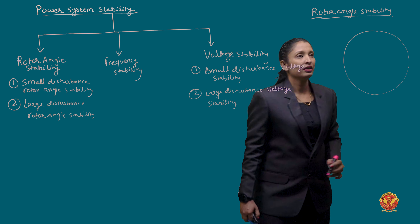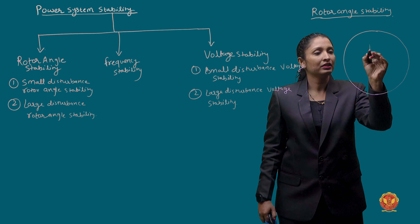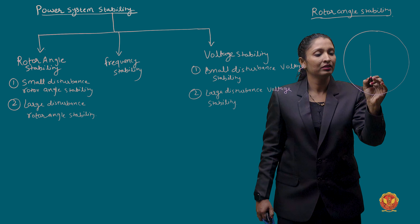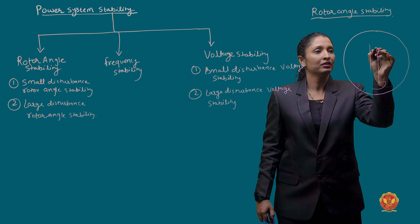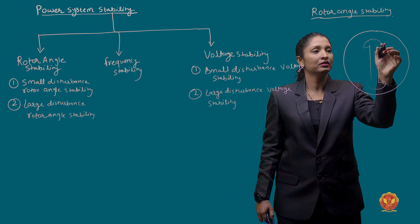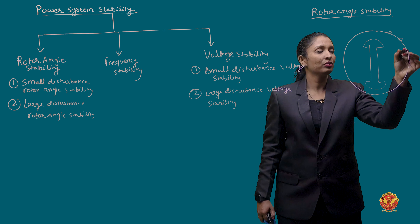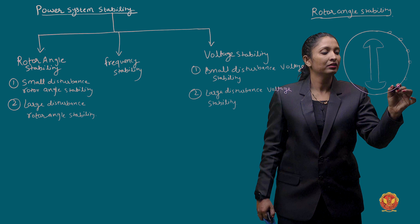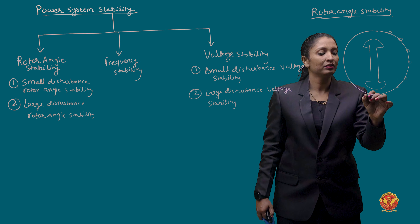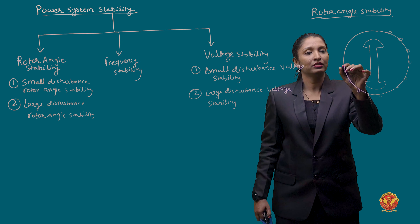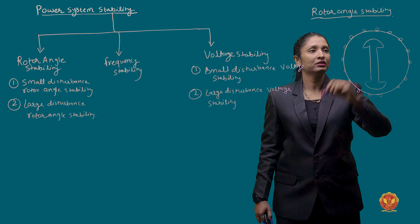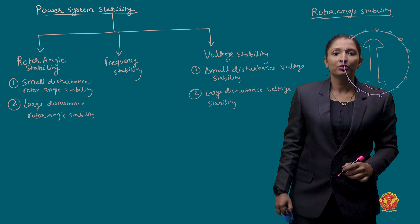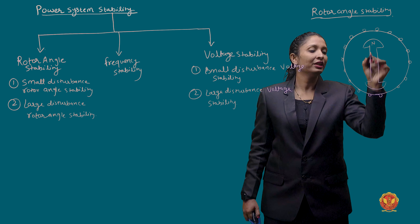This is the stator. The armature coil is placed on the stator. This is the rotor. It is a salient pole rotor.